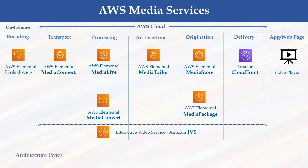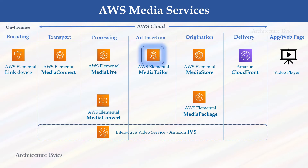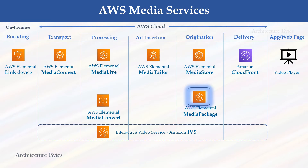Here are AWS media services organized by category. For on-premise encoding, we can use Link Device. For transport on the cloud, we can use MediaConnect. For live media encoding, we can use MediaLive. MediaConvert is a file-based transcoding service. MediaTailor can be used for ad insertion. MediaStore is a media storage service. MediaPackage is for just-in-time packaging. IVS is a live streaming solution. In addition, we can use CloudFront to deliver video streams to video players.